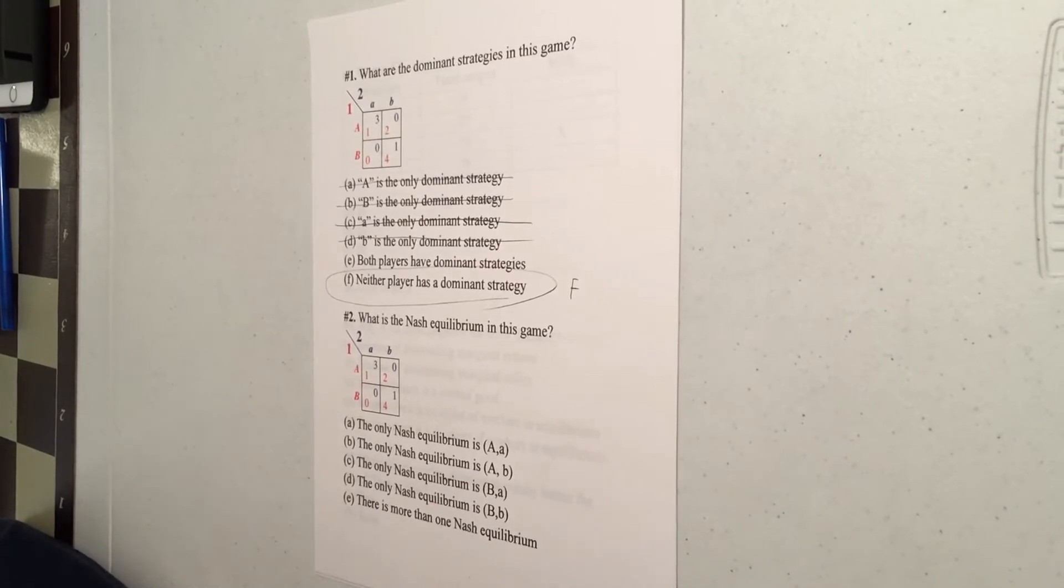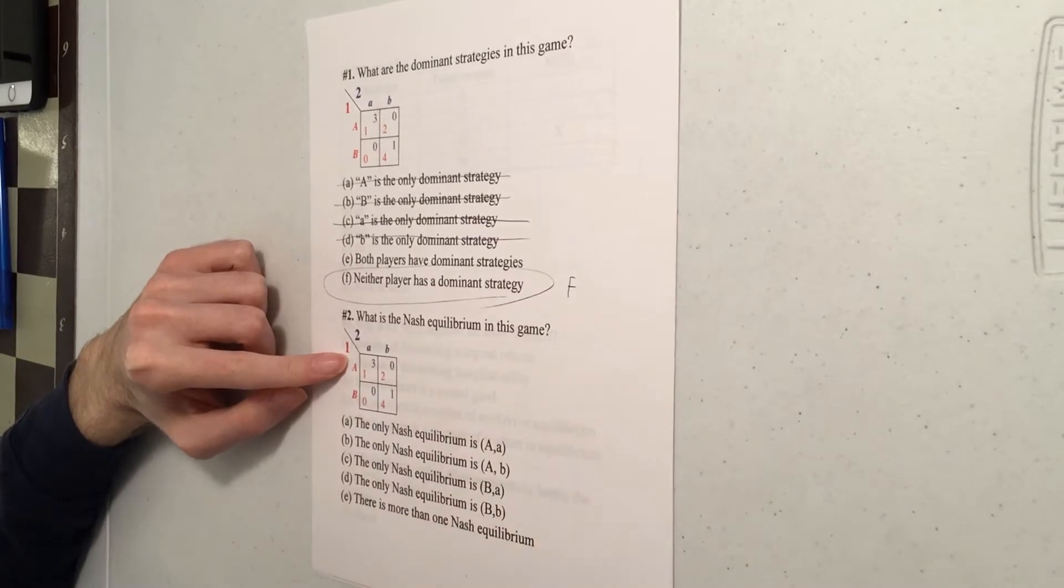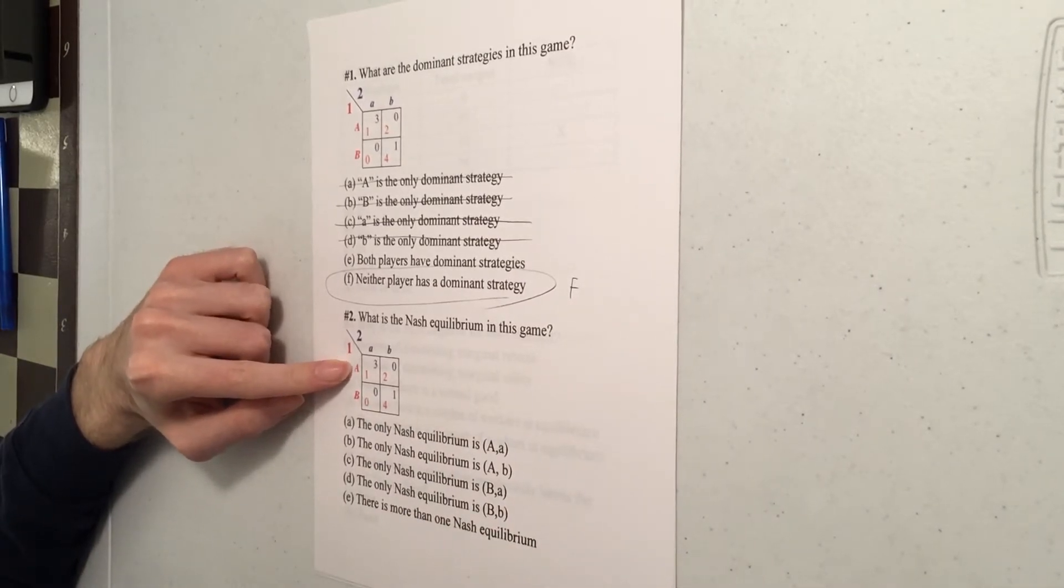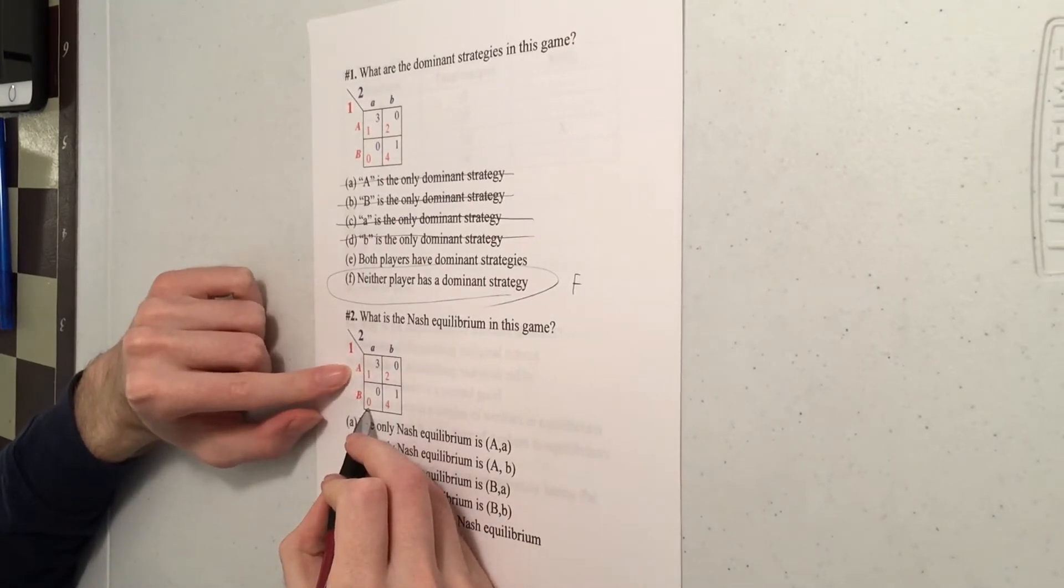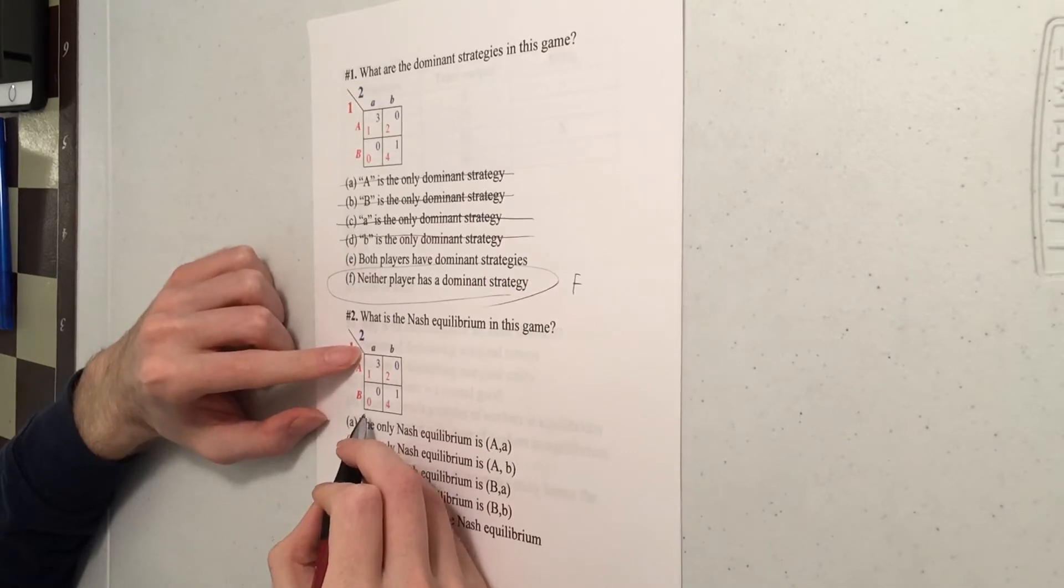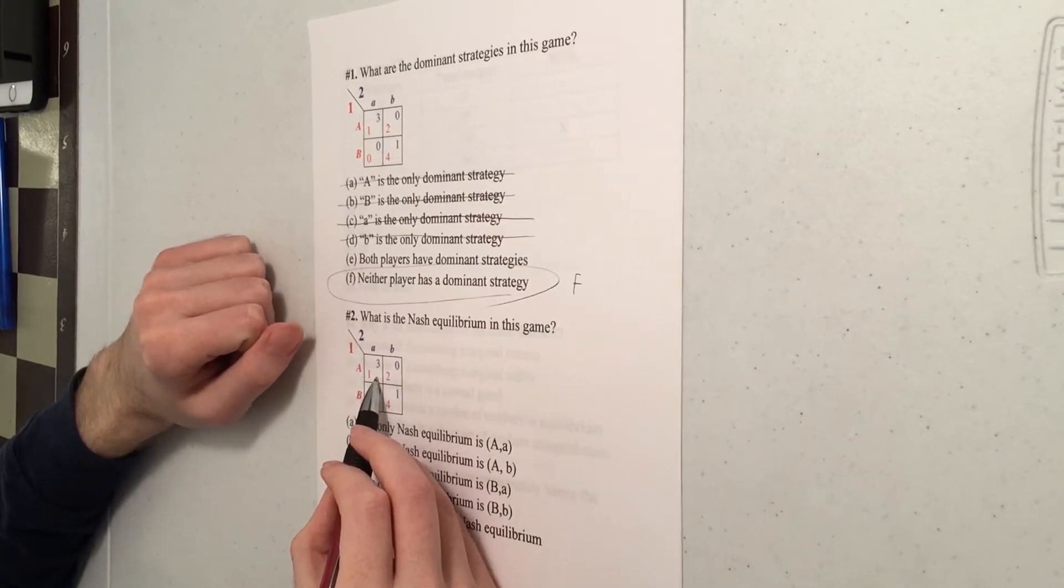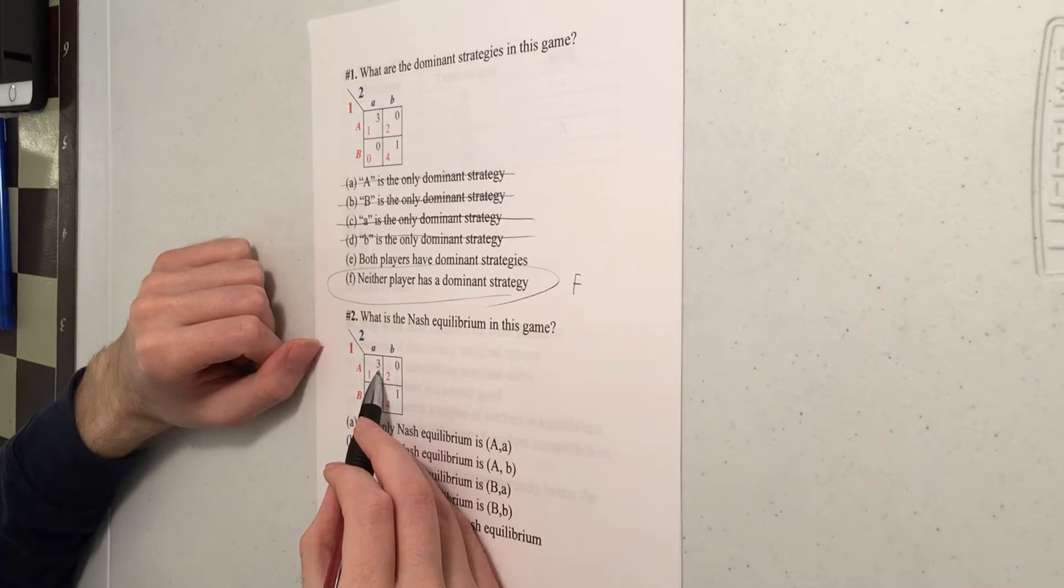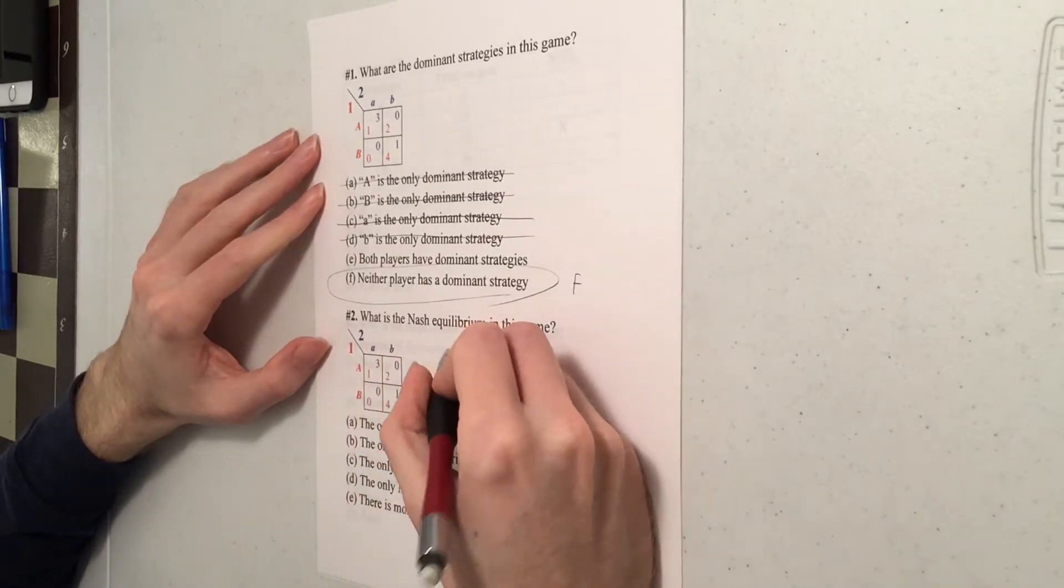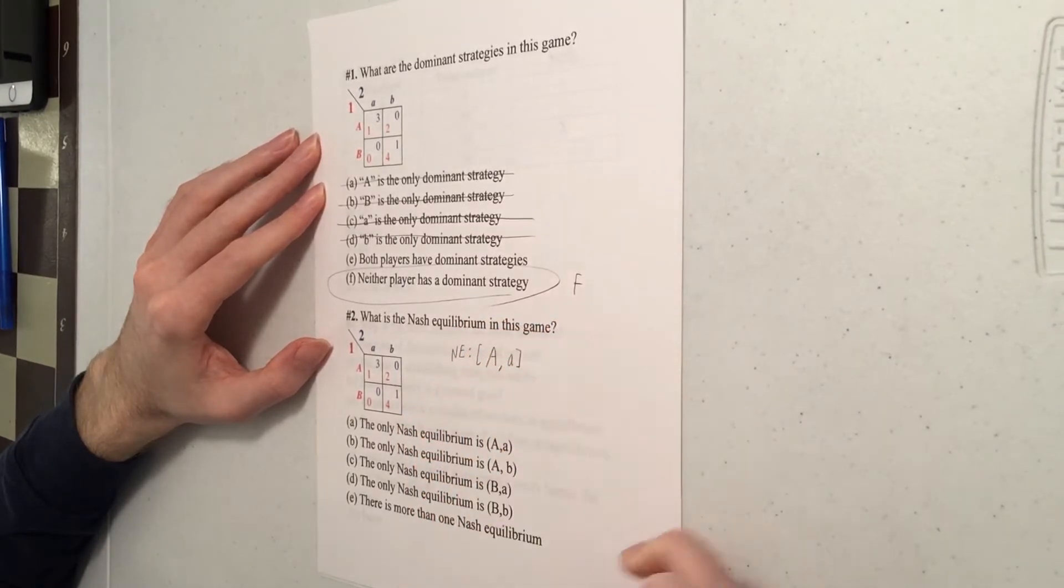So for number two, you can check each cell for the Nash equilibrium and see can either player gain by changing strategies. Let's start here with A,A. If player one tries to switch, they get zero instead of getting one. That's worse. So player one does not want to switch from AA. Does player two want to switch from AA? Well, that would mean playing B, but B gets them zero and little a gets them three. So player two does not want to switch either.